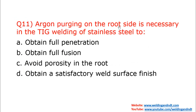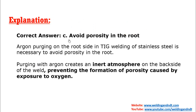Question number eleven: argon purging on the root side is necessary in TIG welding of stainless steel. Argon purging — purging from the inside — is done to avoid porosity in the root. The correct answer is option C: to avoid porosity in the root. Purging with argon creates an inert atmosphere on the back side of the weld and prevents the formation of porosity caused by the presence of oxygen.